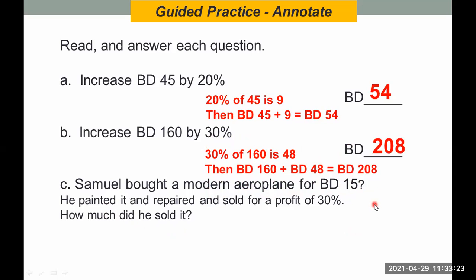Now, this problem solving is very interesting because it really helps us understand what is percentage increase. Samuel bought a modern airplane for 15 BD. Now, he painted it and repaired it and sold for a profit of 30%. How much did he sell it? That's a big question. But how? Step 1, calculate 30% of 15, which is 4.5.